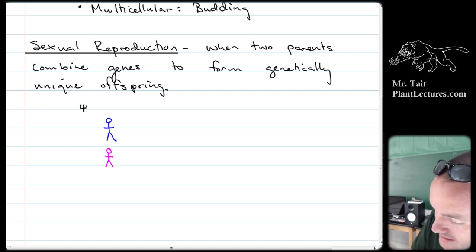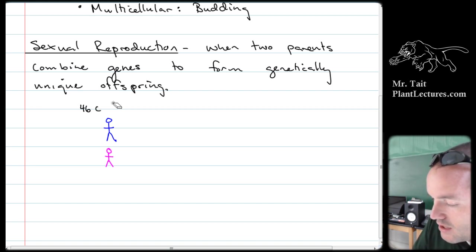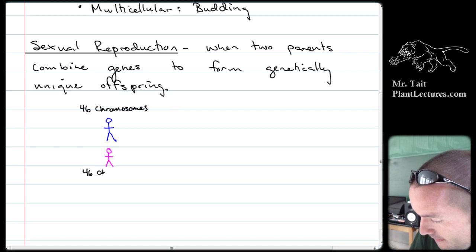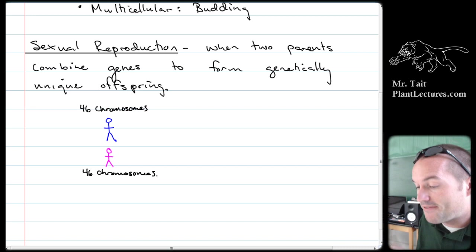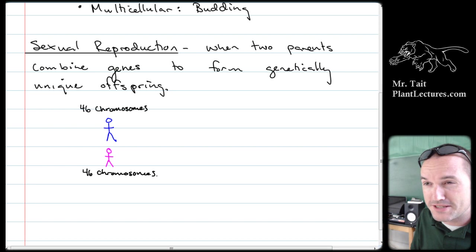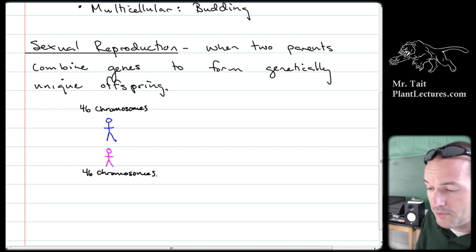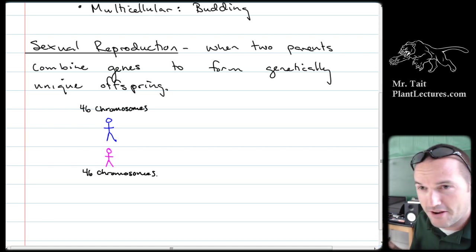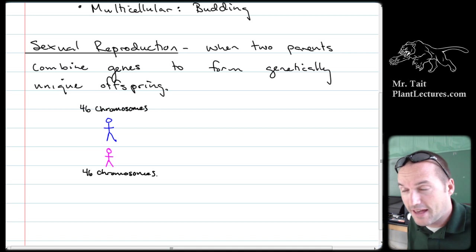In every single one of our somatic cells, humans have 46 chromosomes. If every cell had 46 chromosomes and combined through fertilization, the offspring would have 92 chromosomes. Then their offspring would have 184, and then 368 — it wouldn't take long before there was no room in the cell for anything other than chromosomes.